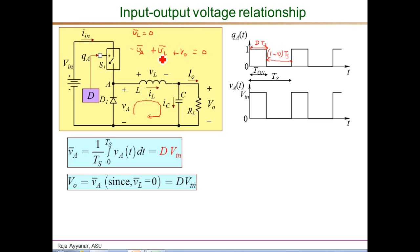But in steady state, we know that V_L average has to be equal to 0 in steady state. Therefore, the output voltage is simply the average value of V_A. We already derived that V_A average is D times V_IN. Therefore, the output voltage V_O equals D times V_IN, or the required relationship V_O over V_IN is exactly equal to the duty ratio D.